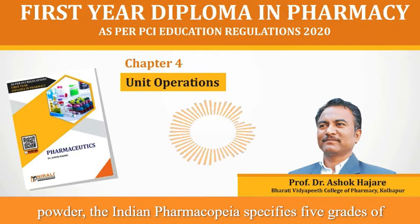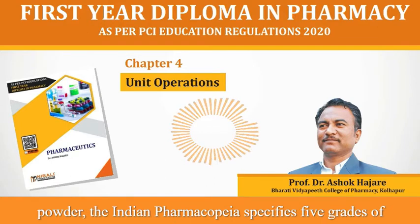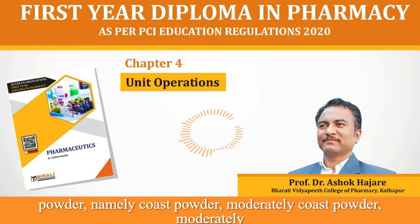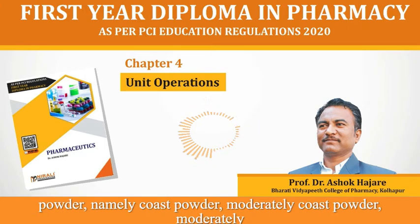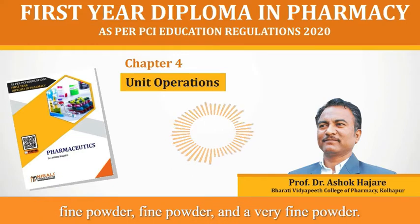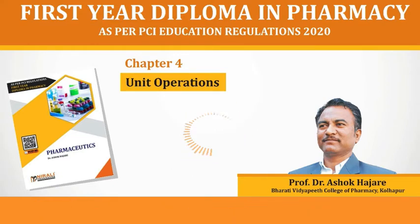The standards for powders for pharmaceutical purposes are given in the Indian Pharmacopoeia depending upon the degree of coarseness or fineness of a powder. The Indian Pharmacopoeia specifies five grades of powder, namely coarse powder, moderately coarse powder, moderately fine powder, fine powder and very fine powder.